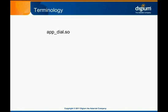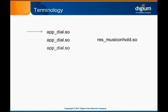Before we move on, let's clear up some terminology. In the Architectural Overview module, we distinguished between Applications and Resources. Remember that applications execute synchronously and are dynamically loaded by the Asterisk core when they're called, whereas resources are statically loaded and can simultaneously operate on more than one channel.